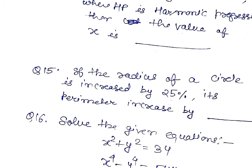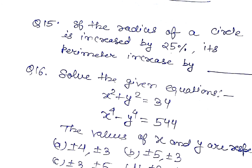Question number 15. If the radius of a circle is increased by 25%, its perimeter increases by what percent.